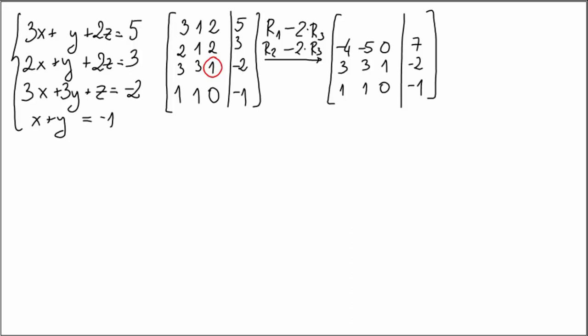Similarly here, 3 minus 2 times 3, that's negative 3. 1 minus 2 times 3, which is negative 5. 2 minus 2 is 0, of course, and 5 plus 4 is 9. Now we have a pivot column, our third column is a pivot column, so the next step is to make the first or the second column into that pivot column.